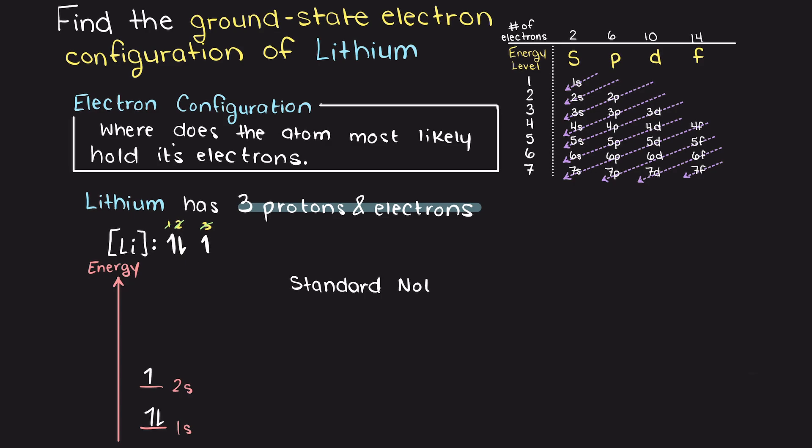And there we go, we can now rewrite the solution like this and we have just solved for the standard electron configuration notation for lithium.